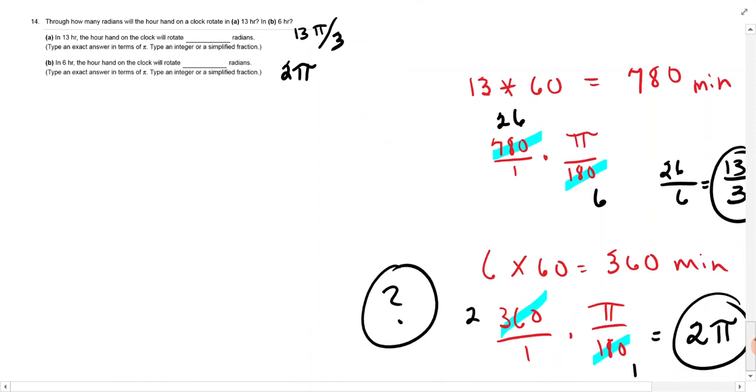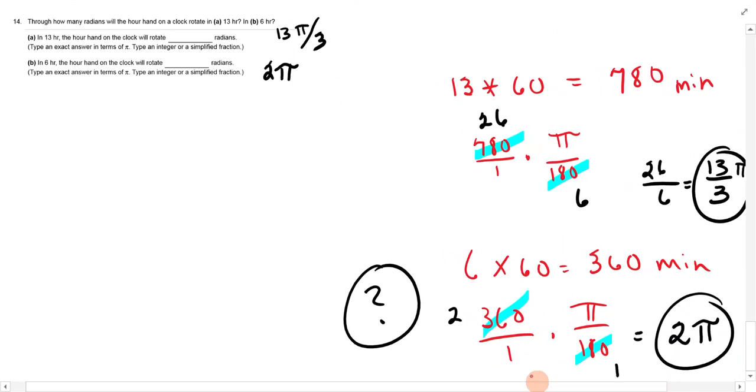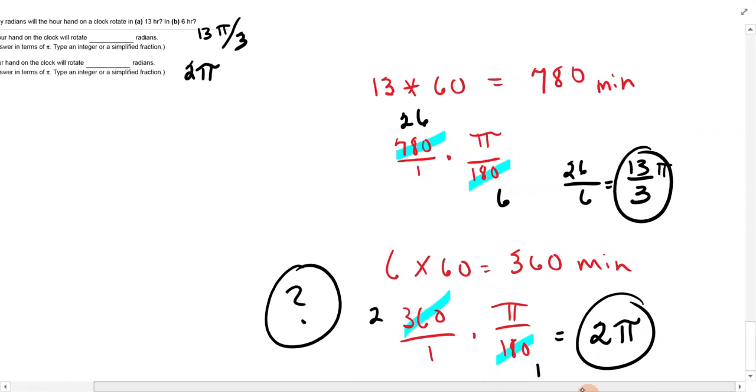For 14, through how many radians will the hour hand on a clock rotate in 13 hours, and B, 6 hours? Well, we're talking about 13 hours. How many minutes is that? How many times around? 13 times 60 is 780 minutes, so we want to convert that. 780 over 1 times pi over 180. 30 will go into that 6, 30 will go into that 26, and then 2 will go into 6 is 3, 2 goes into that 13 pi. So, I did a little bit to reduce it.